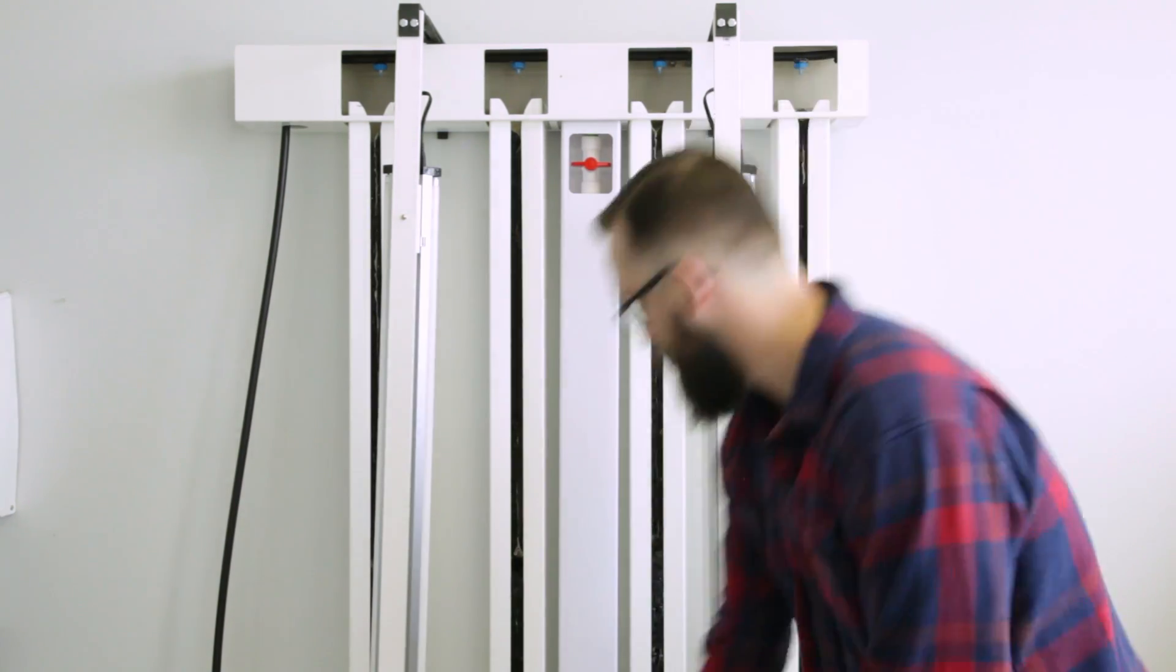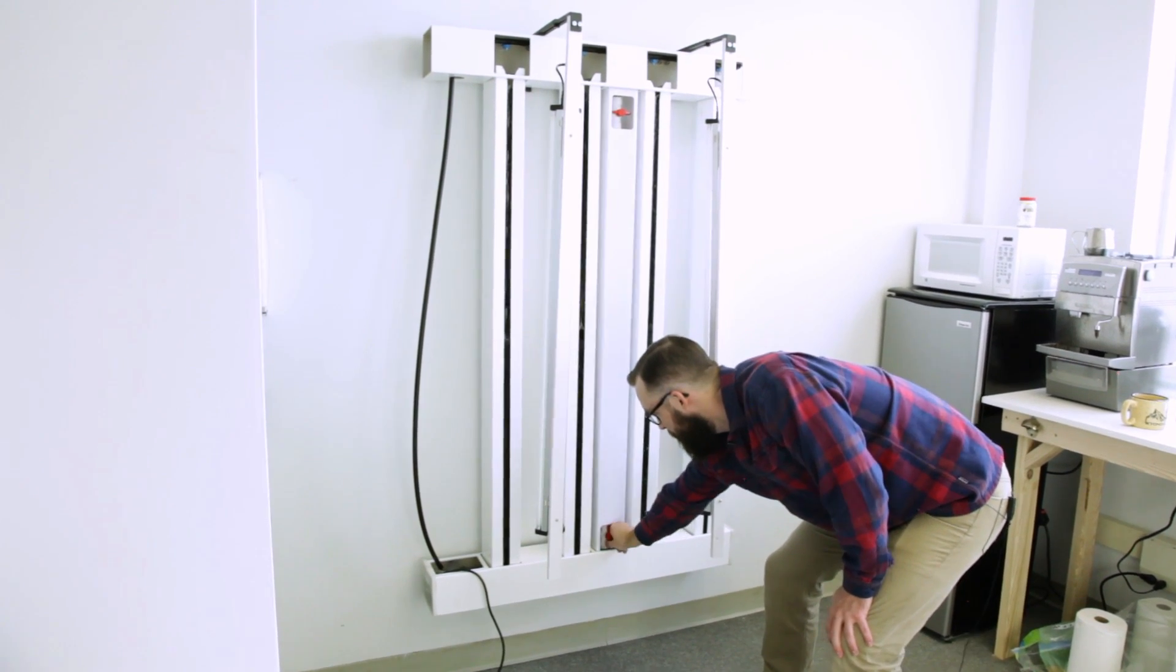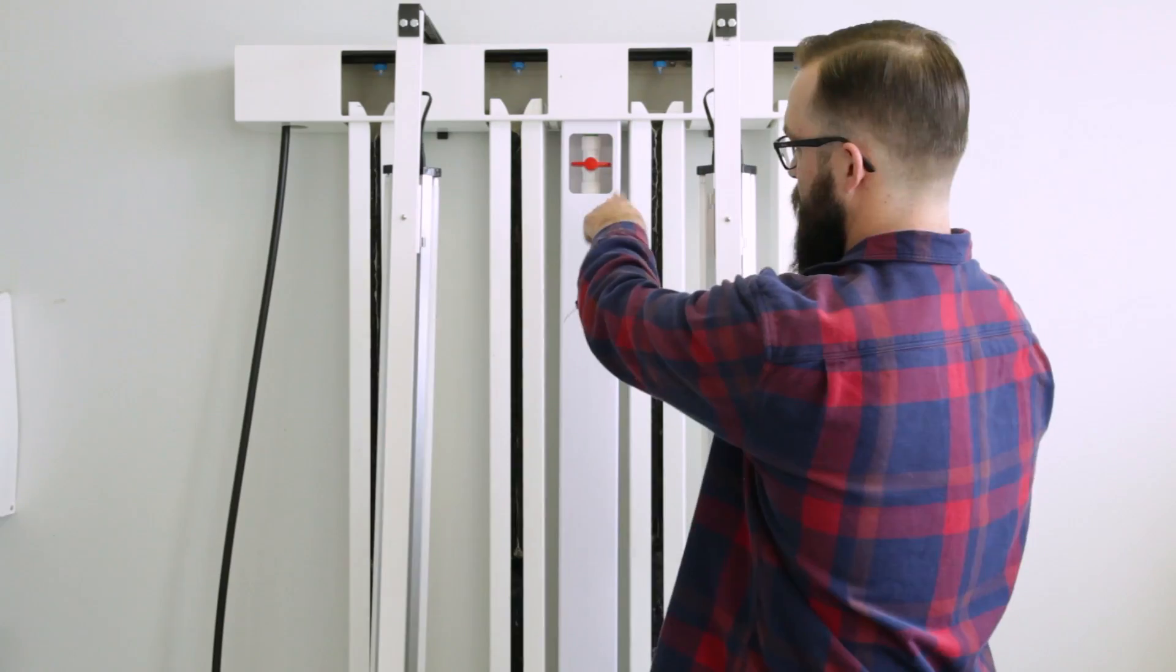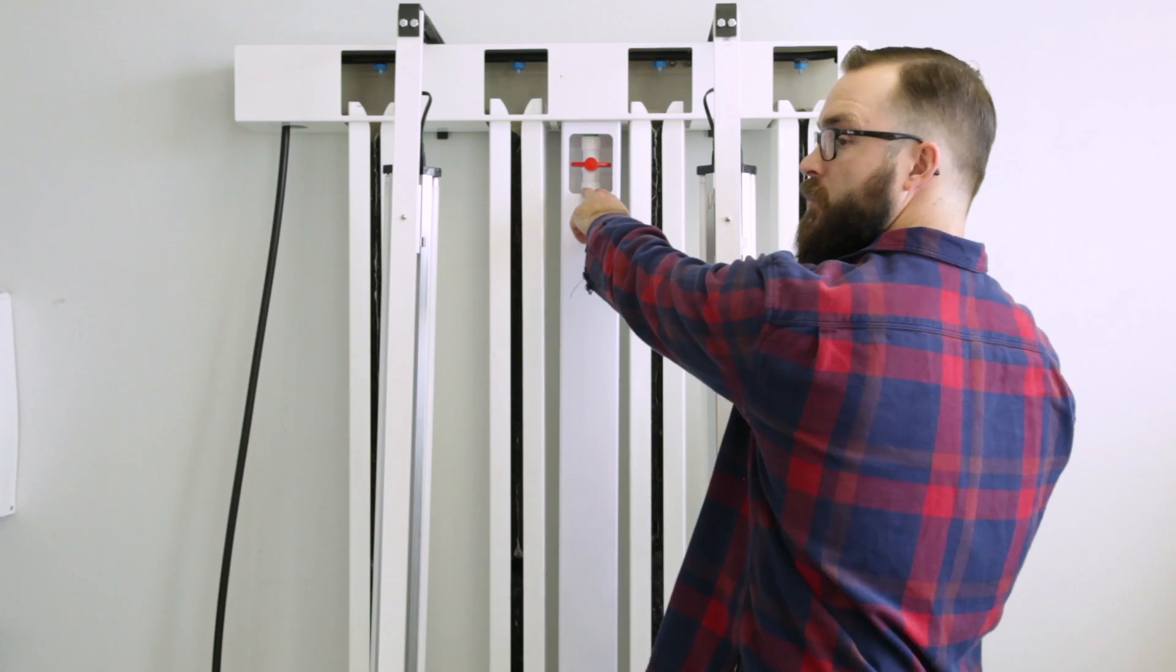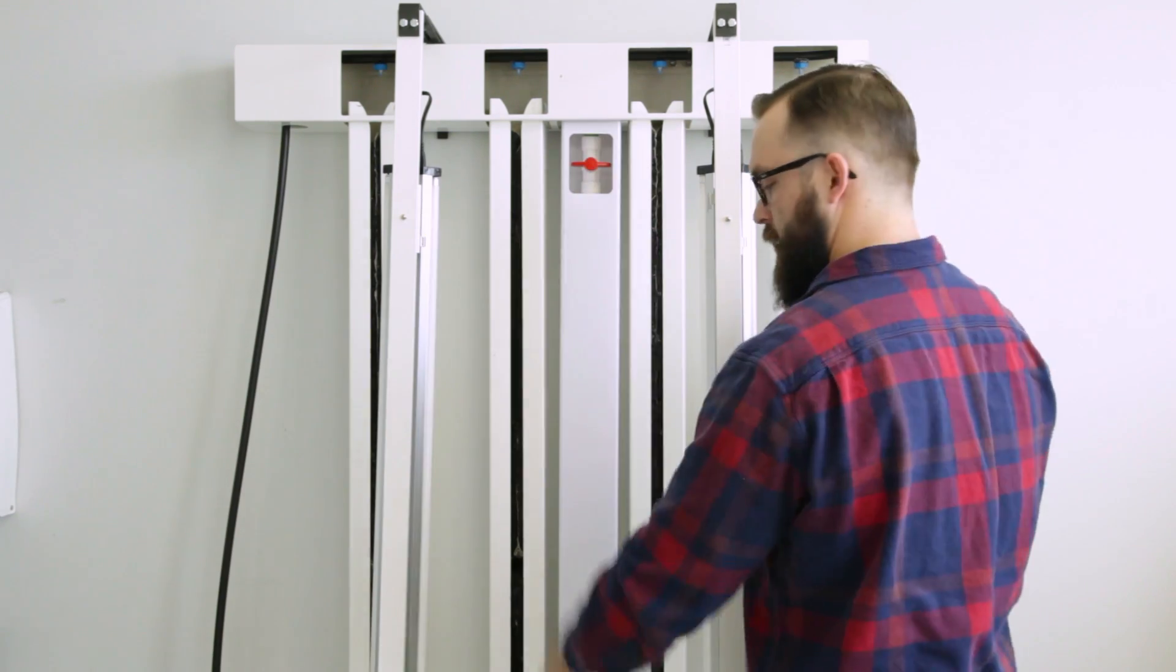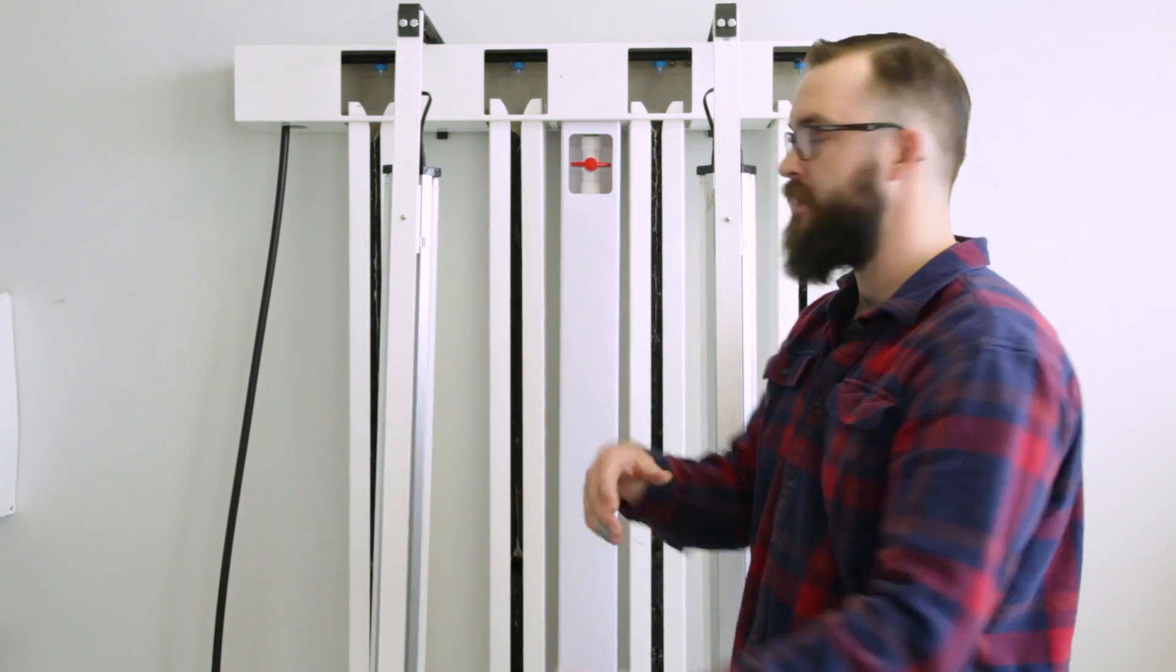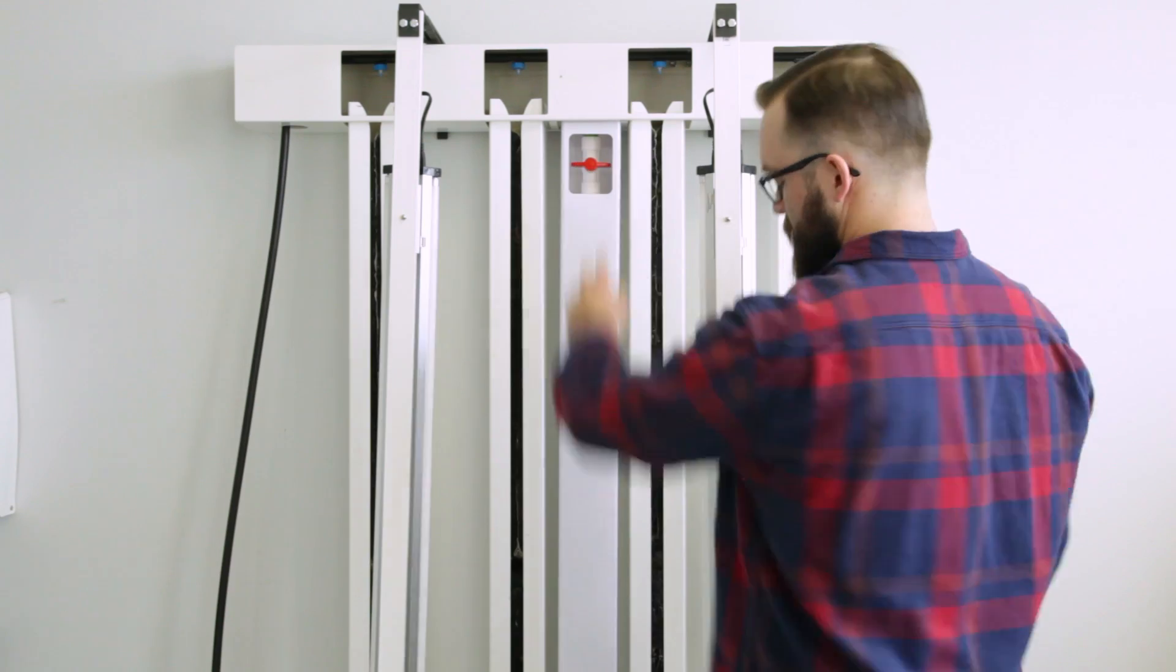And then once it's in place, you will open this bottom valve, leave the top valve closed. If you leave this top valve open, it's just going to run all the way through and overflow your gutter. So it's important to keep this closed, keep the bottom one open.